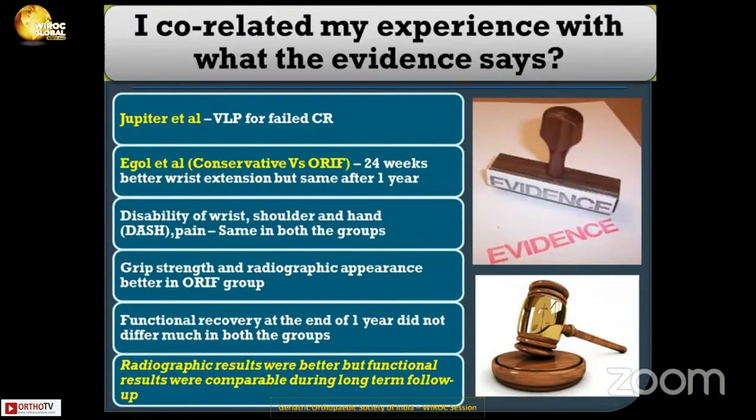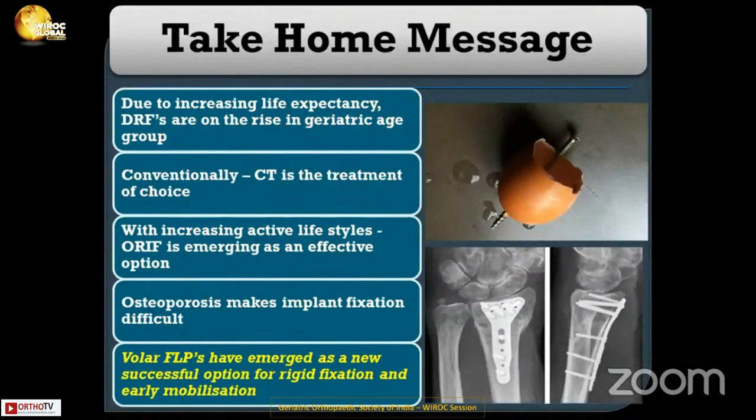What does the evidence say? At 24 weeks, conservative treatment versus open reduction internal fixation shows better wrist extension with ORIF, but outcomes are the same after one year. Disability of the arm, shoulder and hand (DASH), pain, and grip strength are the same in both groups, while radiographic appearance is better in the ORIF group. Functional recovery at the end of one year did not differ much between groups — radiographic results were better, but functional results were comparable during long-term follow-up.